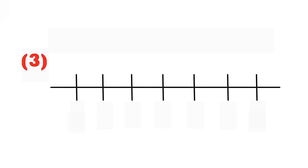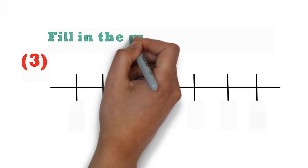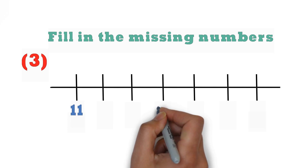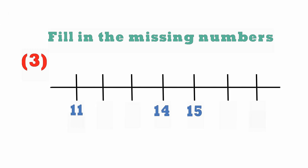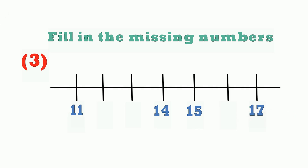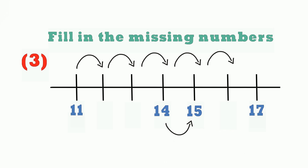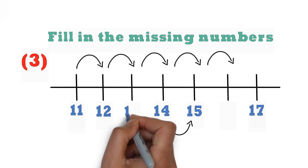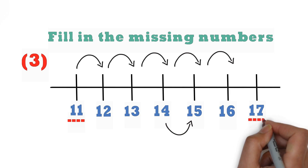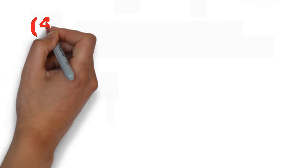Now let's look at another question — we've got a number pattern here. It says fill in the missing numbers, so this looks like a number line. We've got 11, some number, some number, and 14, 15, and we don't know what this is, and we've got 17. When you closely look at this number pattern, we see that these are next to each other because we see 14 and 15 next to each other. So we can easily identify this is a number line, and we can just count on from number 11 to number 17.